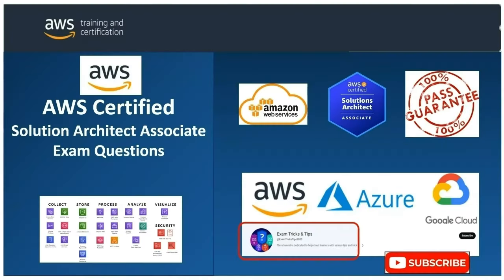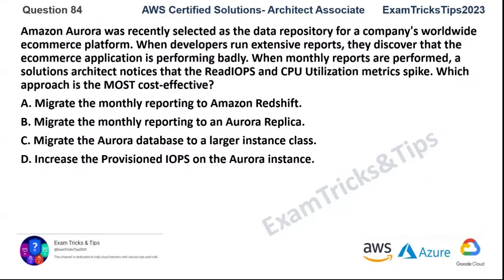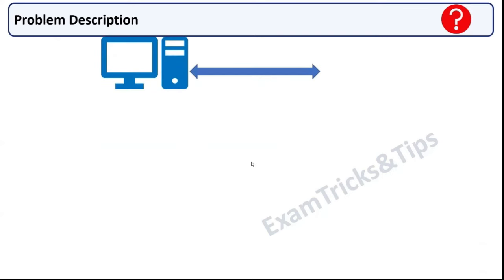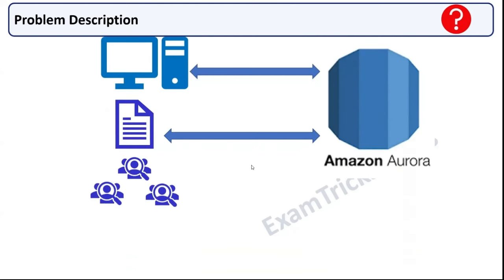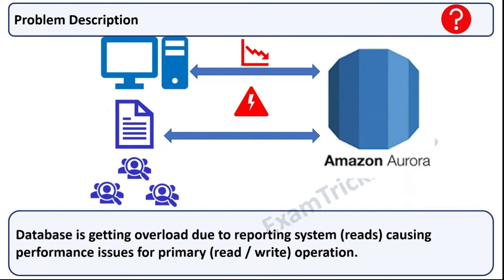Let's move on to the next question. If you're finding this analysis and discussion useful, please hit that subscribe button if you haven't already. Question number 84. Amazon Aurora was recently selected as the data repository for a company's worldwide e-commerce platform. When developers run extensive reports, they discover that the e-commerce application is performing badly. A solution architect notices that read IOPS and CPU utilization metrics spike when monthly reports are performed. Which approach is most cost-effective?